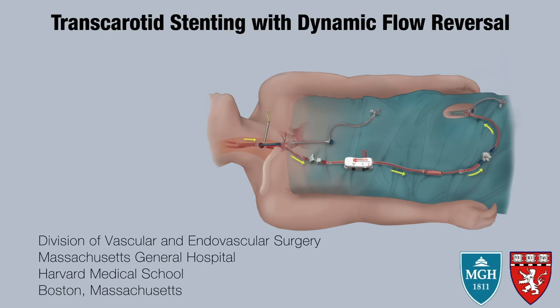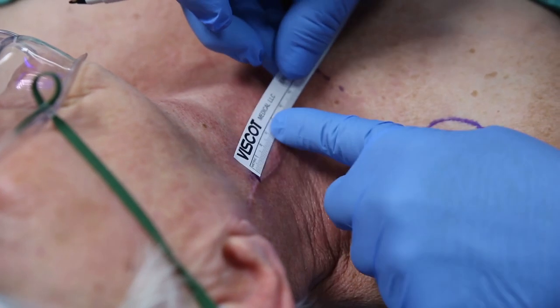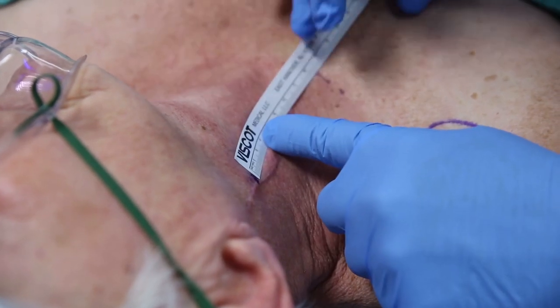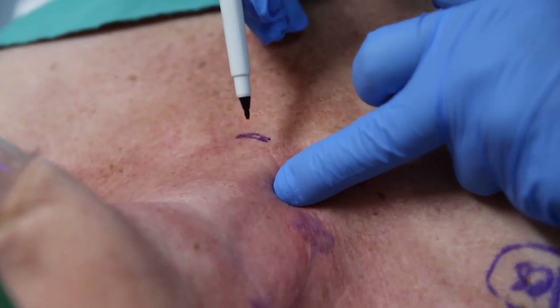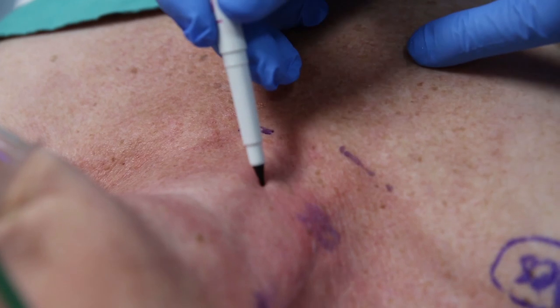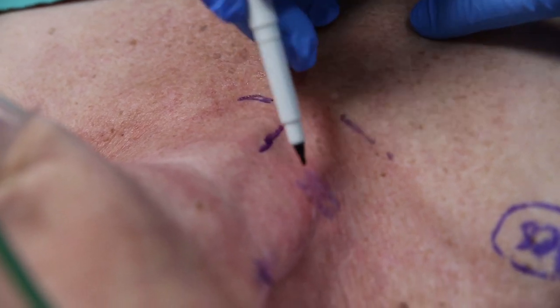The patient is a 77-year-old female with critical recurrent carotid stenosis after prior CEA, being treated with trans-carotid stenting using flow reversal as part of the Silk Road trial. The patient was placed in a supine position and a minimum distance of 5 centimeters between the carotid bifurcation and clavicle was confirmed by ultrasound.